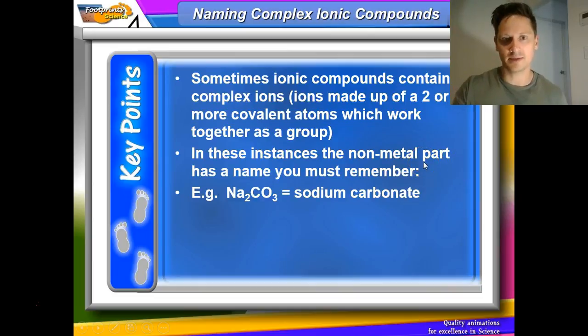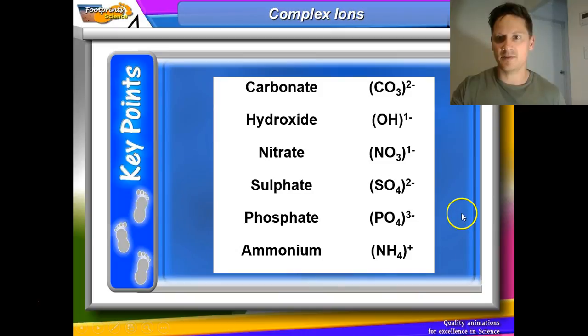Sometimes ionic compounds contain complex ions. And the complex ions were the ones that we wanted to remember. So an example here is a carbonate ion. Here's a list of these ions, and you'll do well to remember these. So we've got carbonate, which is CO3^2-, hydroxide OH-, nitrate NO3-, sulfate SO4^2-, phosphate PO4^3-, and the only positive one is ammonium NH4+.